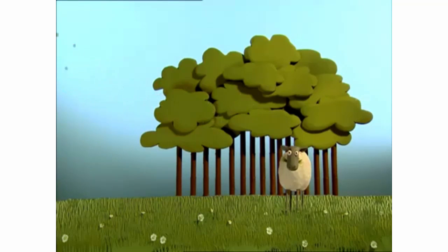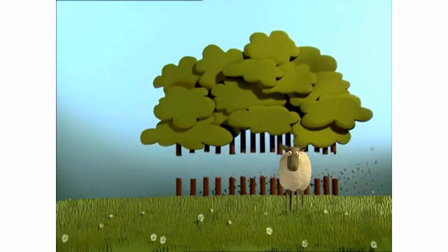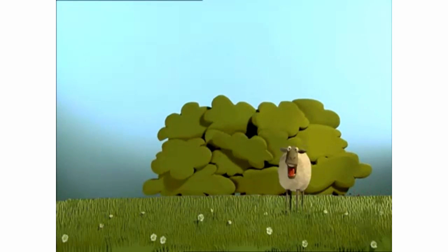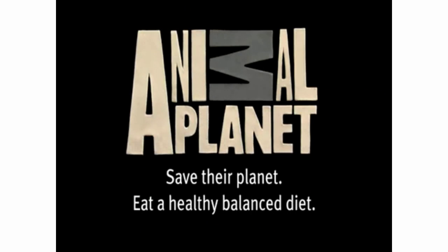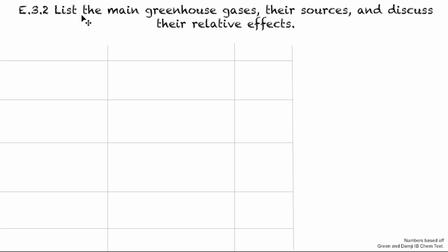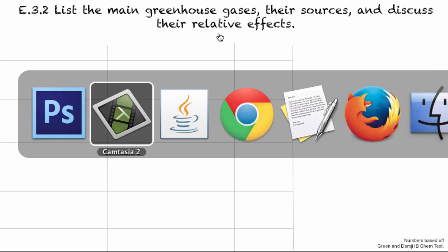The more meat we eat, the more cows there are producing greenhouse gases. Welcome to E3.2: list the main greenhouse gases, their sources, and discuss their relative effects.